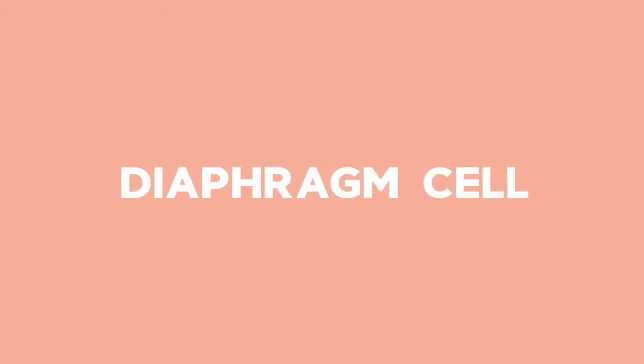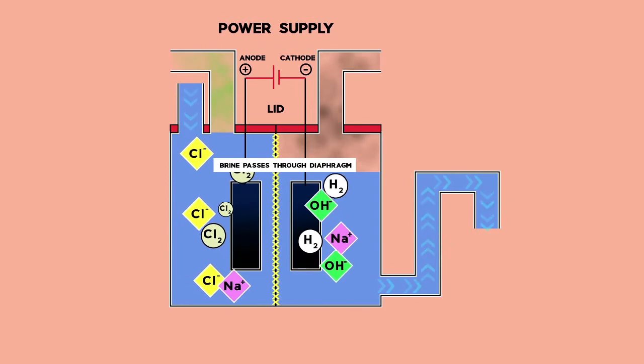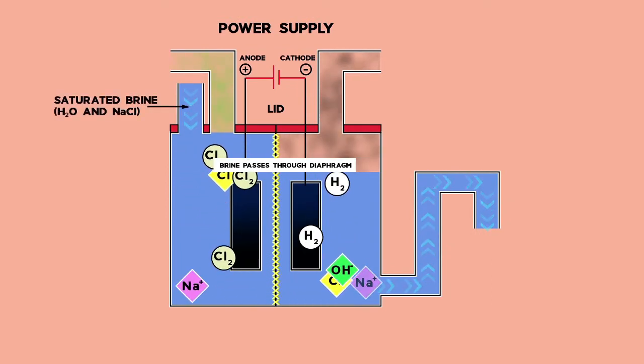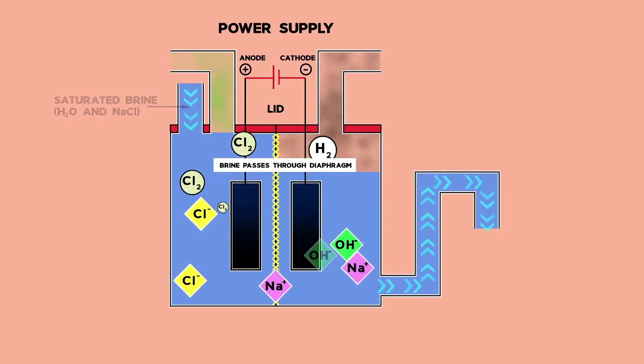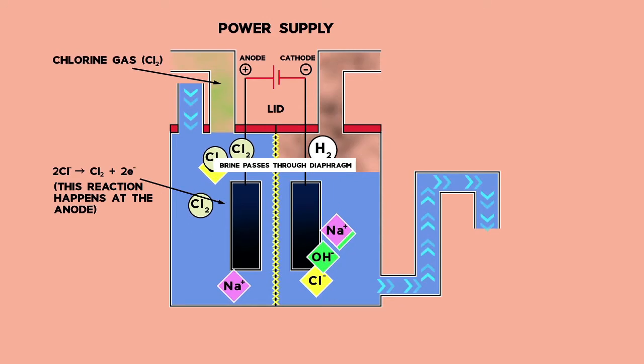The first is the simplest. It's called the diaphragm cell, and the concentrated salt solution called brine enters the cell on the left. After the brine enters the cell, the chlorine is produced at the anode.